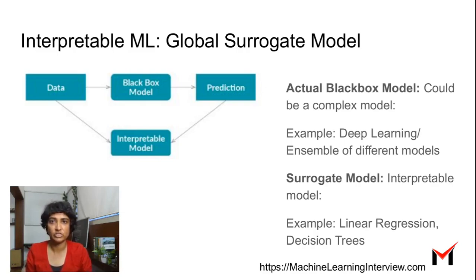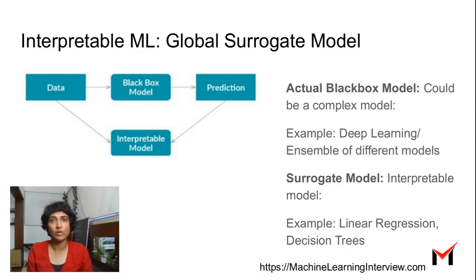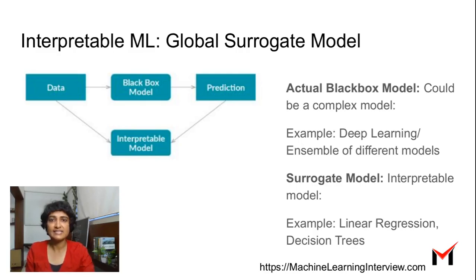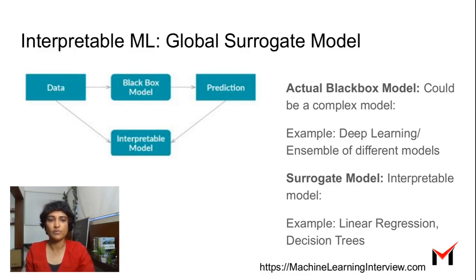As you can see in the picture, the surrogate model — or interpretable model — is learned only for the purpose of interpreting the predictions of the black box model. Since this is a model that's easy to interpret, you can see the importance of various features, or whatever interpretability your surrogate model offers.